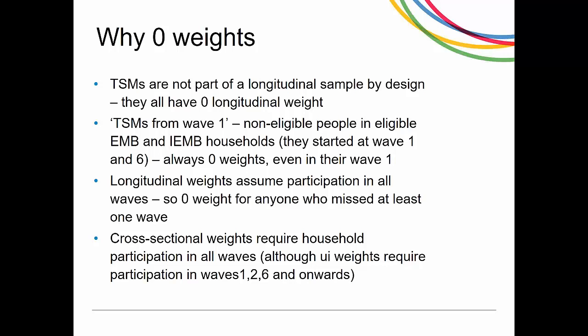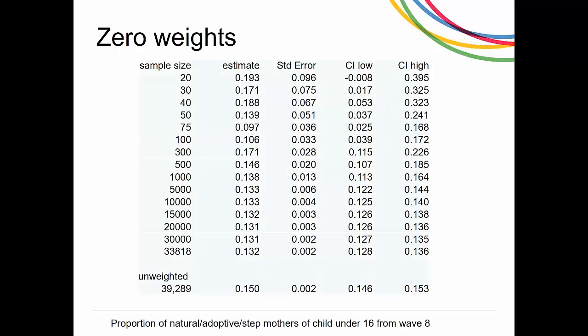Longitudinal weights assume participation in all waves, so we have zero weights for anyone who missed at least one wave. Cross-sectional weights currently require household participation in all waves, although this requirement is not very strict — for example, the I weight doesn't require participation in waves 3, 4, and 5. Do you need to worry about zero weights?